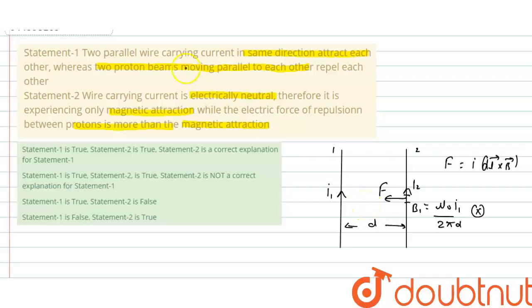So statement one is true. Now statement two: wire carrying electrically neutral, yes, there is same reason what I gave you. So statement two is also correct, and statement two is a correct explanation for statement one. That wire carrying current is electrically neutral, therefore it is experiencing only magnetic attraction.